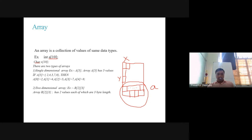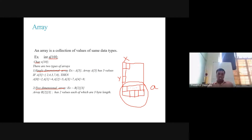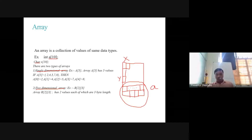There are two types of arrays: single dimensional and two dimensional. A single dimensional array example: a[5]. This array has 5 values, reserving 5 memory locations all named a. For example, if a[5] = {2, 4, 5, 7, 8}, it reserves 5 memory locations and stores values 2, 4, 5, 7, and 8 in successive memory locations.